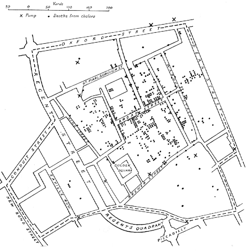Geographic information systems and the underlying geographic information science that advances these technologies have a strong influence on spatial analysis. The increasing ability to capture and handle geographic data means that spatial analysis is occurring within increasingly data-rich environments. Geographic data capture systems include remotely sensed imagery, environmental monitoring systems such as intelligent transportation systems, and location-aware technologies such as mobile devices that can report location in near real-time.